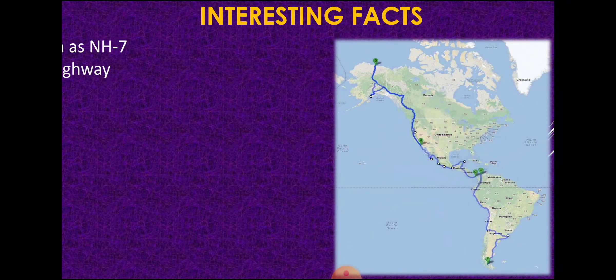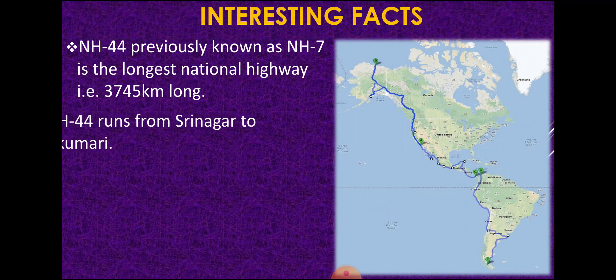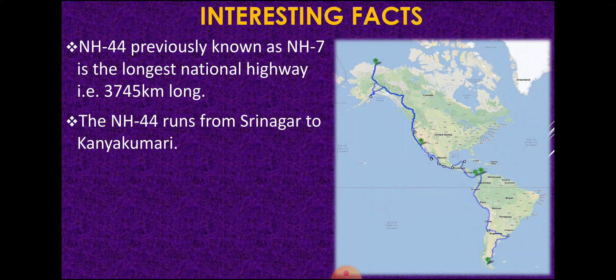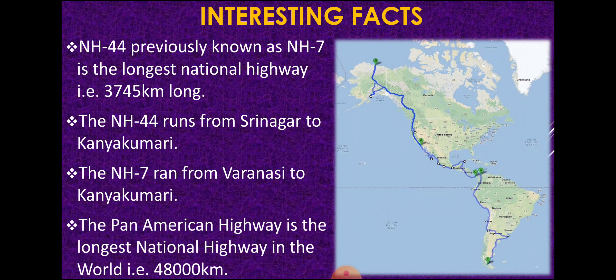Some interesting facts about roadways in India: NH44, previously known as NH7, is the longest national highway in India at 3,745 km long. NH44 runs from Srinagar to Kanyakumari; earlier NH7 ran from Varanasi to Kanyakumari. Globally, the Pan-American Highway is the longest highway in the world, covering an approximate distance of around 48,000 kilometers.